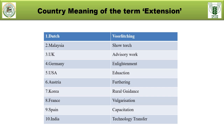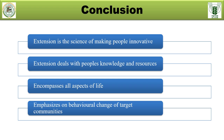Let us conclude by saying that extension is the science of making people innovative, because we are constantly providing updated and new information. Extension deals with people's knowledge and resources. It encompasses all aspects of life — there are programs for males, females, youth, and different sections of society. Extension emphasizes behavioral change of the target community so that the community can make decisions and solve problems on their own. In our next class, we will be discussing the principles, philosophies, and objectives of extension. Thank you.